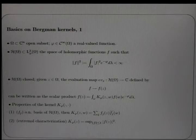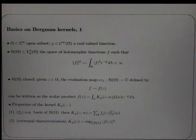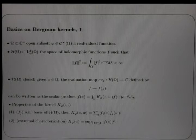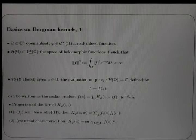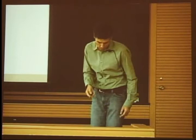The Bergman kernel can be described as follows: if F_j is an orthonormal basis of H(omega), orthonormal with respect to the scalar product induced by the weight, then the kernel is K_phi(Z,W) = sum of F_j(Z) times F_j(W)-bar. This shows it is holomorphic in Z and anti-holomorphic in W. It also has an extremal characterization: the restriction to the diagonal, K_phi(Z,Z), equals the supremum of |F(Z)|^2 where F ranges over elements of H(omega) with norm at most one.